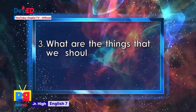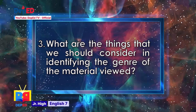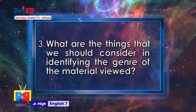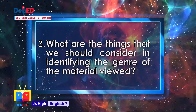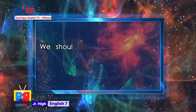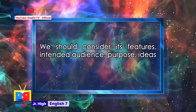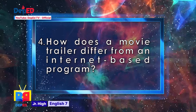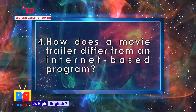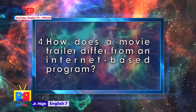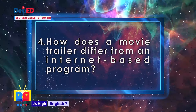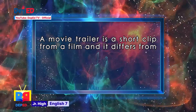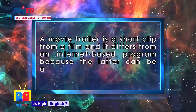What are the things we should consider in identifying the genre of the material viewed? We should consider its features, intended audience, purpose, ideas, and information presented. How does a movie trailer differ from an internet-based program? A movie trailer is a short clip from a film, and it differs from an internet-based program because the latter can be accessed through websites.